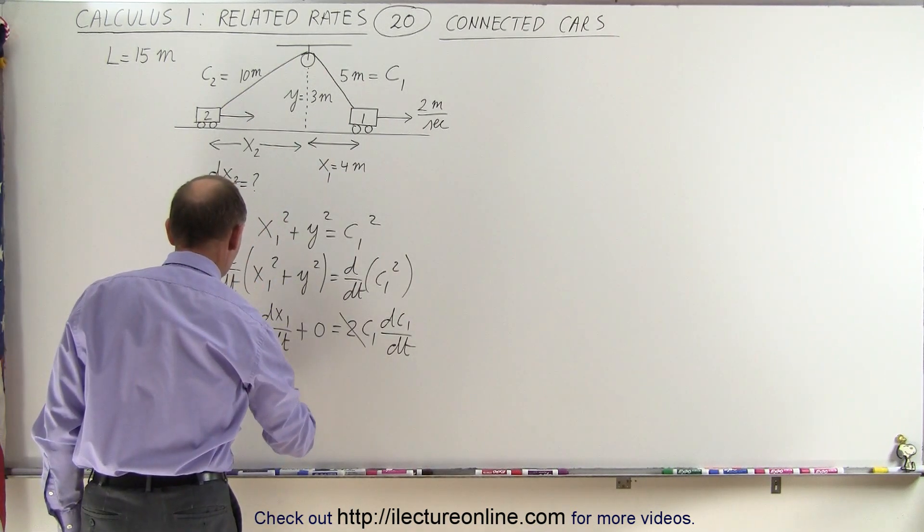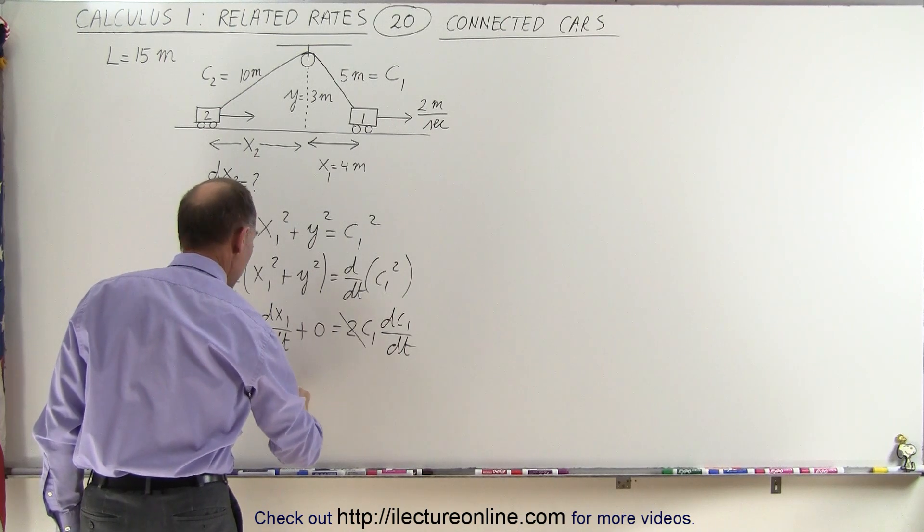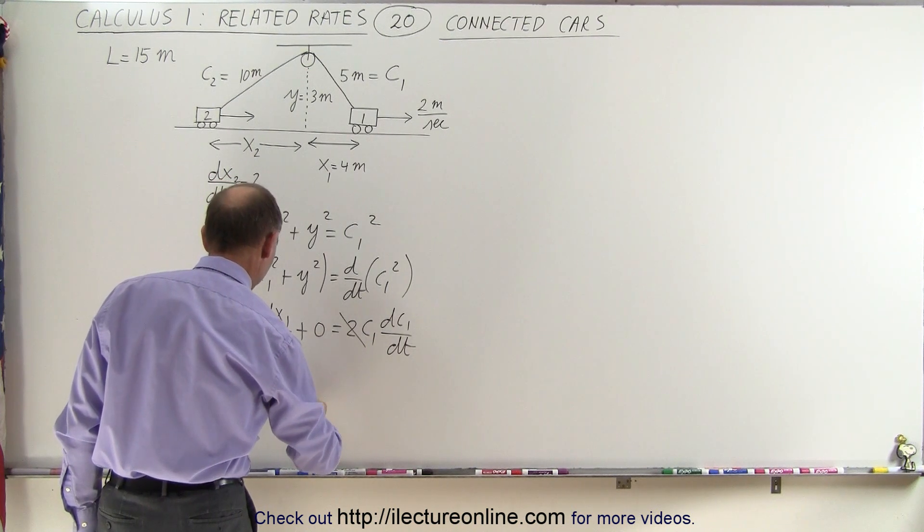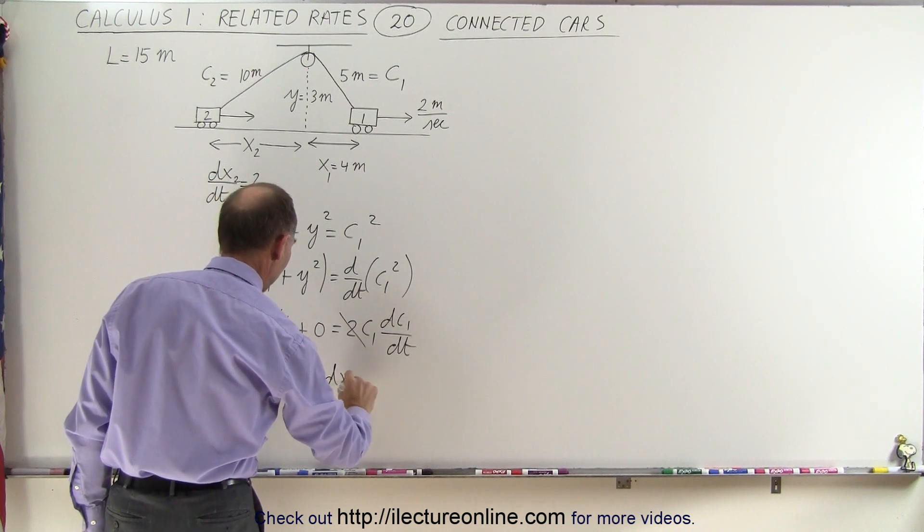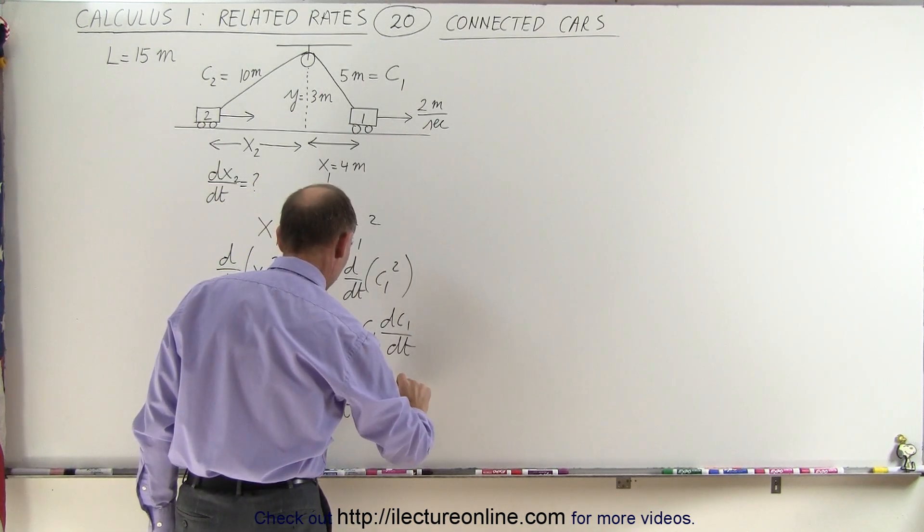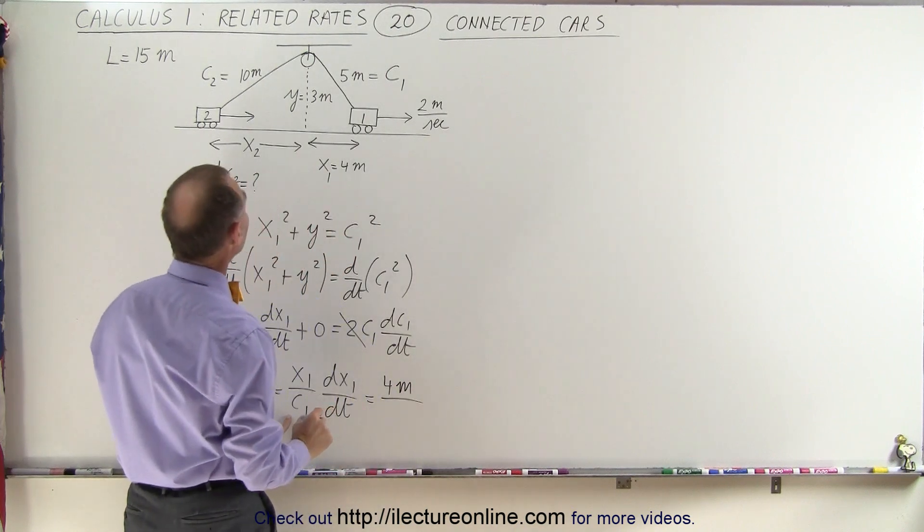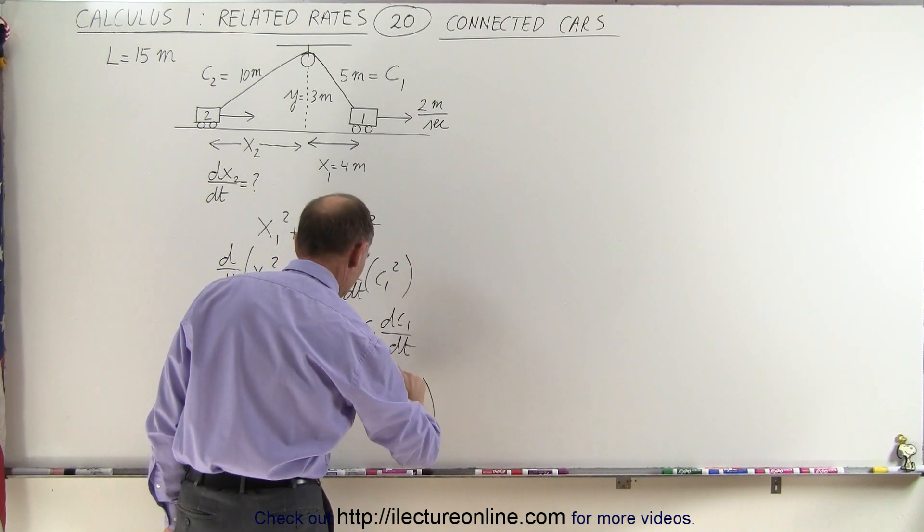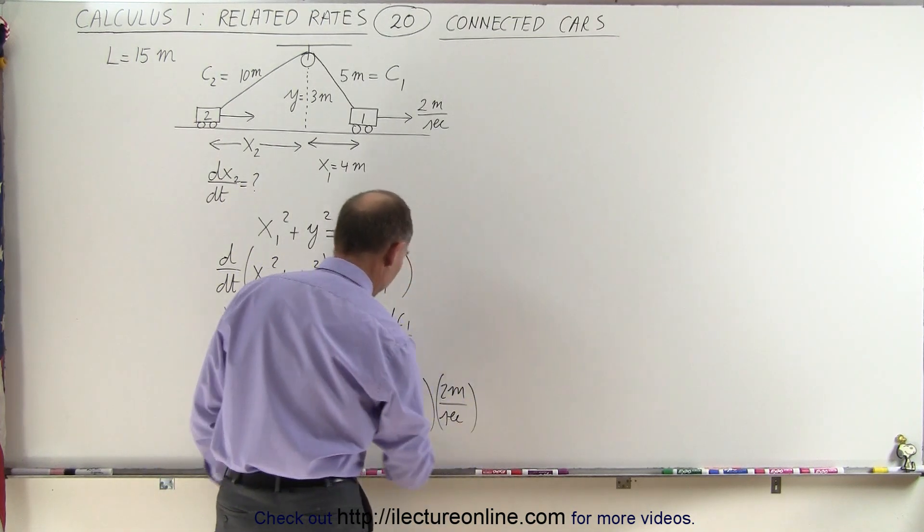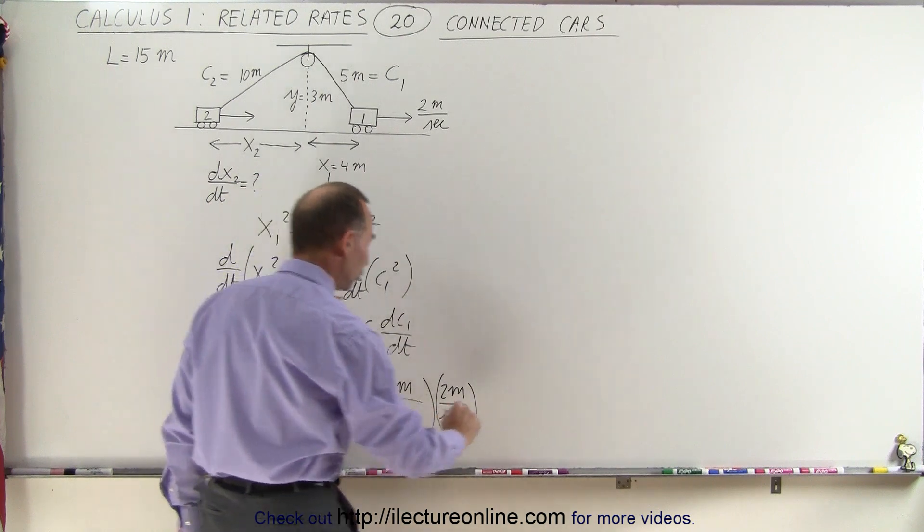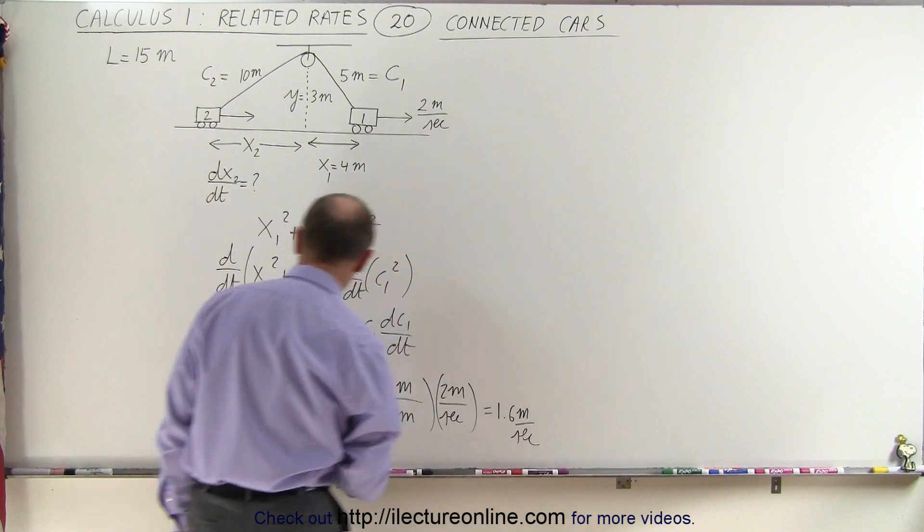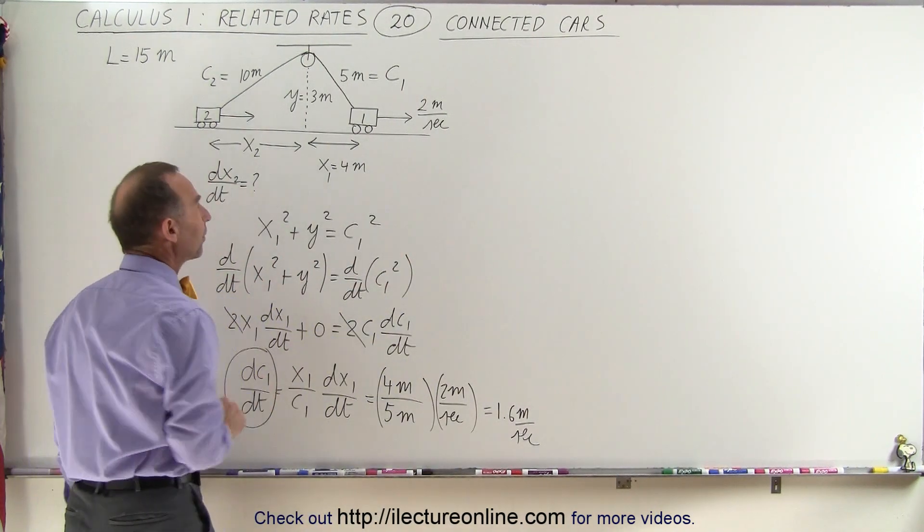Which means that dc1 dt is going to be equal to x1 divided by c1 times dx1 dt. x1 is 4 meters, c1 is 5 meters, and dx1 dt is 2 meters per second. So this gives us 0.8 times 2 which is 1.6 meters per second and that is the rate of change of c1 with respect to time.